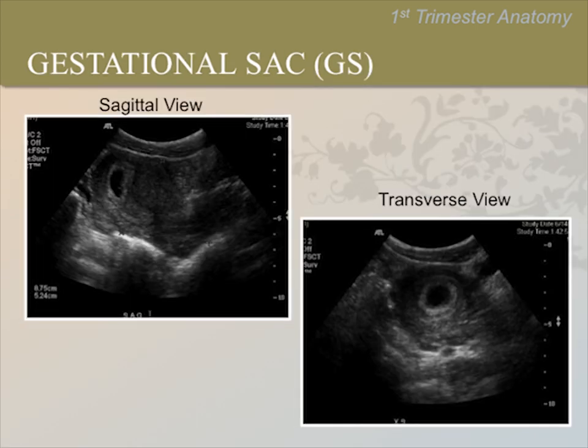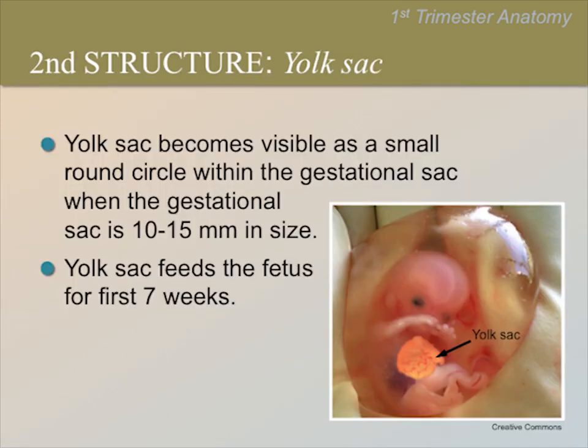Here are two views of the same uterus. The upper left is a sagittal image. The lower right is transverse. The gestational sac contains fluid. How will it appear on ultrasound? Please pause the video now to discuss in the group. The answer is that the fluid will appear black. The gestational sac in each image is now outlined. Later, you will learn how to measure the gestational sac to determine the gestational age.